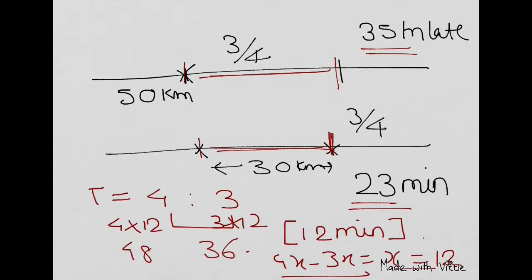You just need to see the difference between them is 4x and 3x is x which is equal to 12. So if you multiply them, because the gap you need is 12, so 4 into 12 is 48 and 3 into 12 is 36.